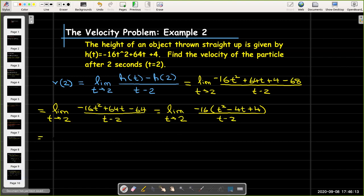When I do that, inside the parentheses I'm left with t squared minus 4t plus 4 all over t minus 2. And I can factor the quadratic expression in parentheses, so then I'll be left with the limit as t approaches 2 of negative 16 times (t minus 2) times (t minus 2) all over t minus 2. So I have a common factor of t minus 2. I can go ahead and reduce to the limit as t approaches 2 of negative 16 times (t minus 2).